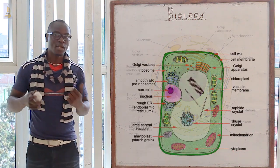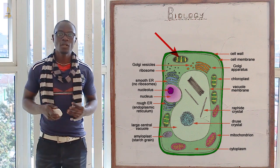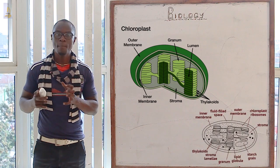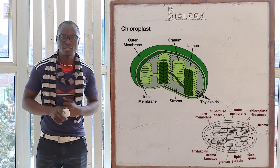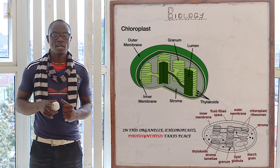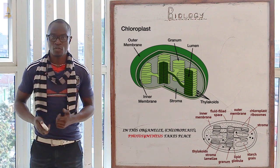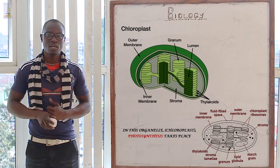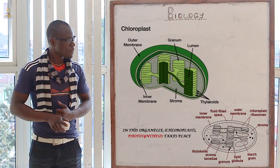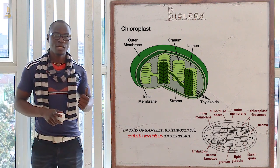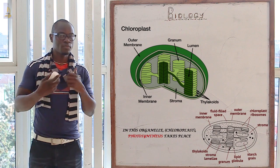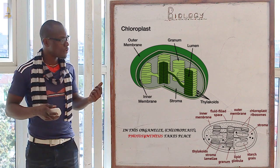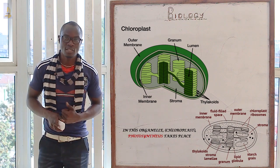We also have another organelle which is the chloroplast. The chloroplast is mainly found in the plant cell; it is not found in the animal cell. The chloroplast has grana for the light stage in photosynthesis and stroma for the dark stage in photosynthesis, as you can see in the diagram. The connecting ring between one granum and the next is called the intergrana or the lamella.